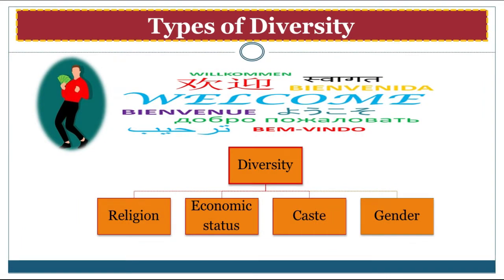Our next topic is types of diversity. There is no hard and fast rule about exactly which diversities will be found in every country, but basically four types of diversity can be seen: based on religion, based on economic status, based on caste, and based on gender.